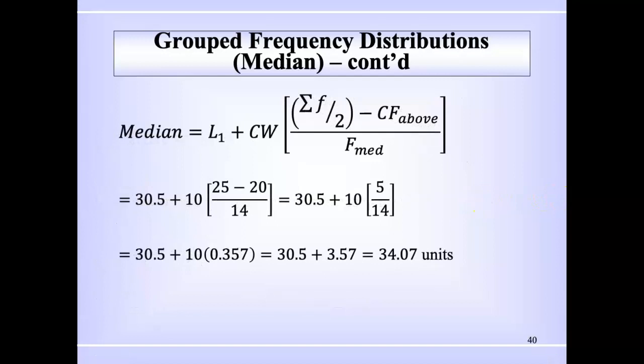So plugging in the figures, we have L1 = 30.5 plus class width 10, open brackets, summation of f over 2, that's 25, minus CF above which is 20, all divided by the F_med which is 14. So 25 minus 20, that's 5. 5 over 14, that's 0.357. Then we do a multiplication: 10 times that is 3.57.